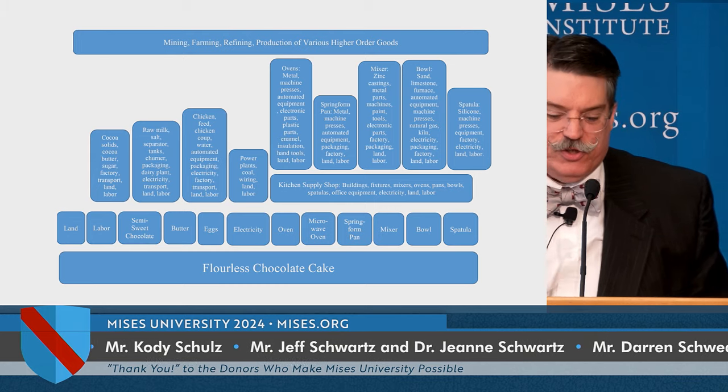At each of these stages, the producer obtains the services of the factors of production by purchasing them in exchange for money. When production of the lower-order good is completed, the producer sells it for money. The egg producer spends money investing in chickens and chicken feed, produces eggs, and sells them to the baker, who uses them to make a flourless chocolate cake. The baker spends money buying semi-sweet chocolate, eggs, and butter, makes the greatest dessert in the world, and sells it in the dessert shop for money.